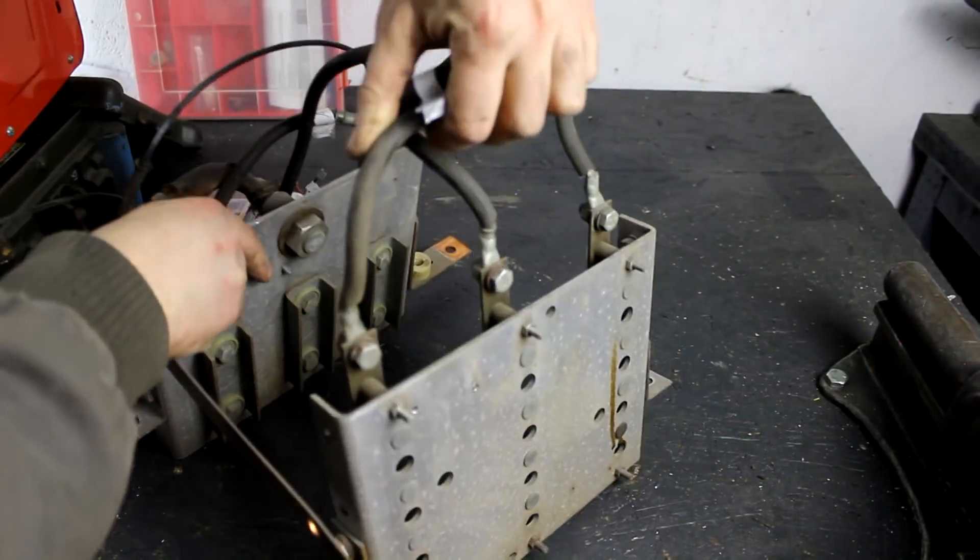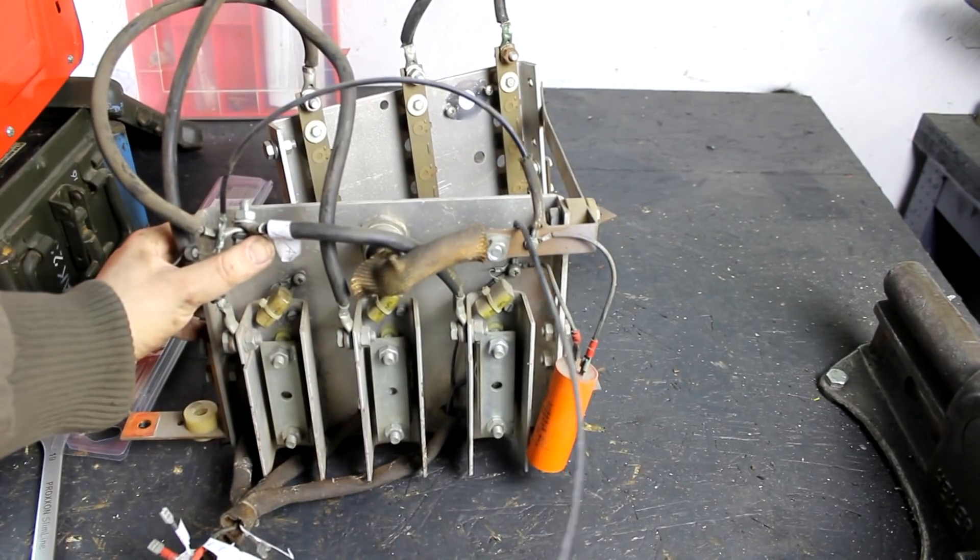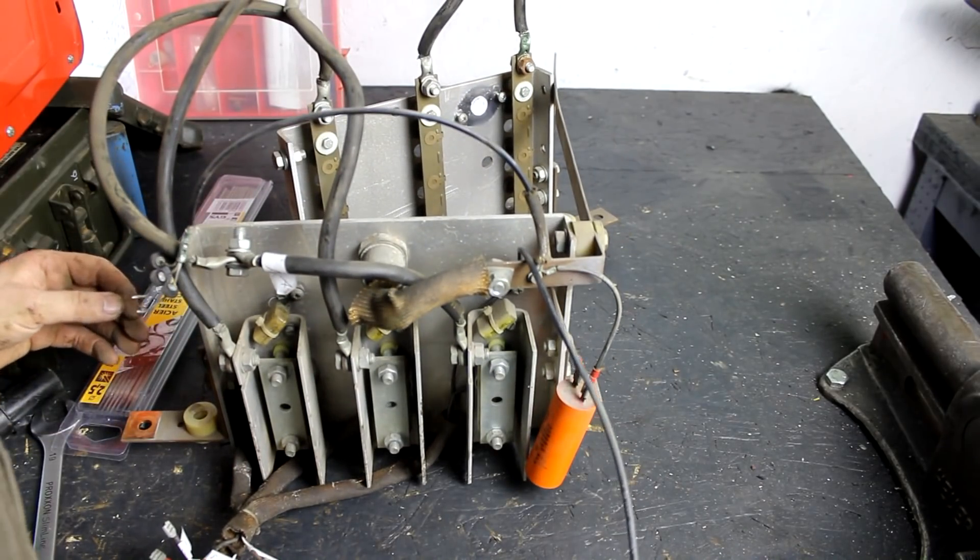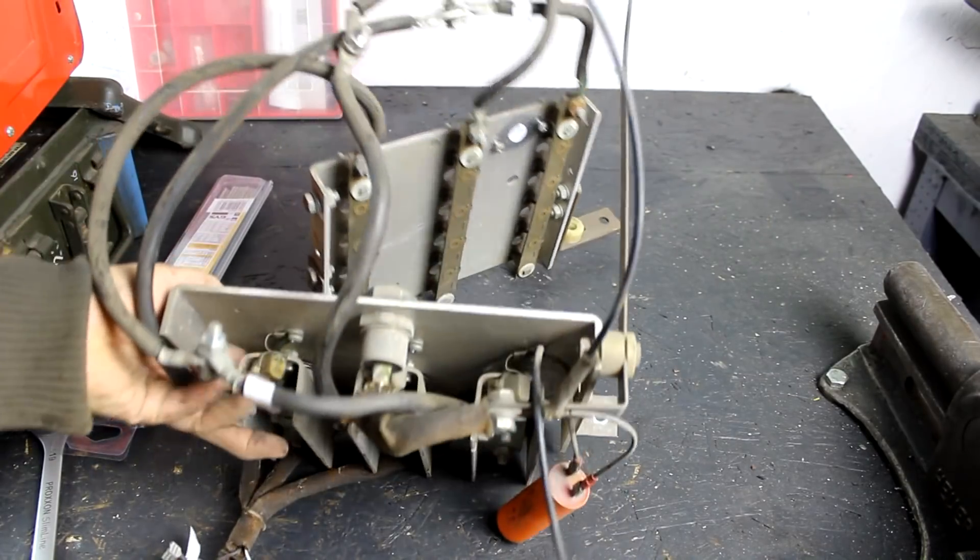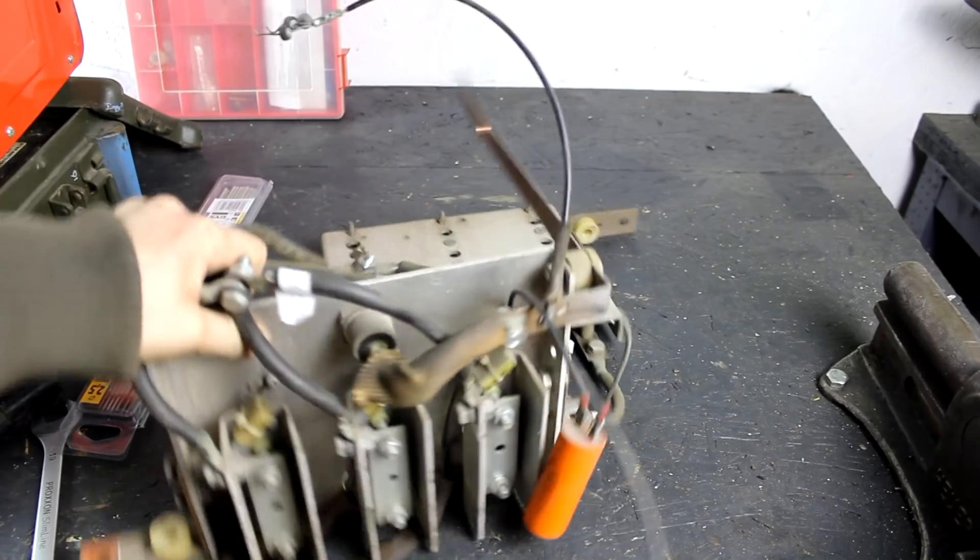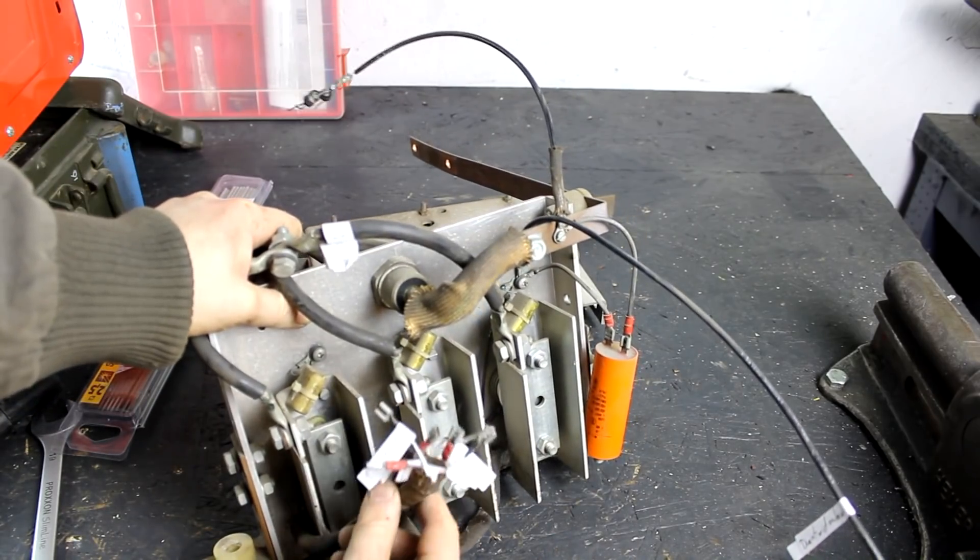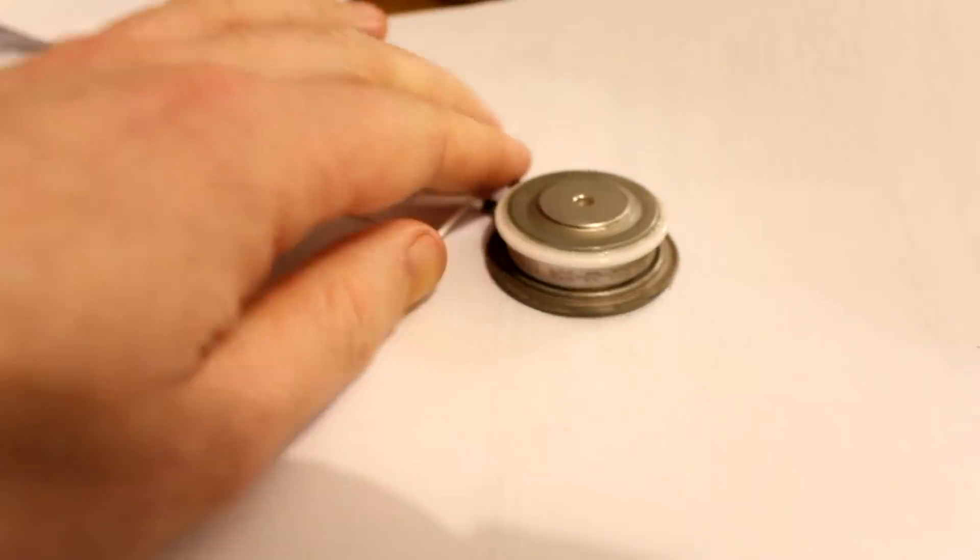So here we have the entire three-phase rectifier bridge after I pulled it out of the enclosure. And the parts are, of course, installed on the two heatsinks. This is the side with the SCRs, but you still can't see them. They are white, and here you can maybe see their rims. And after removing one of those smaller heatsinks, I pulled one of them out of there. And this is what they look like.